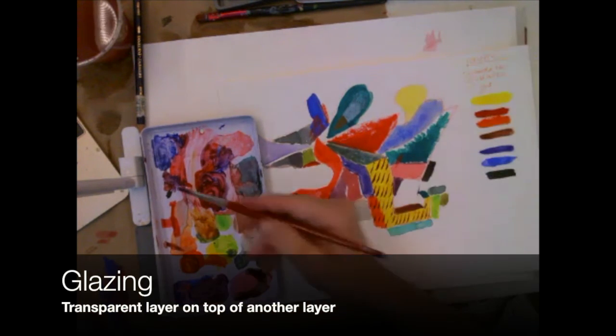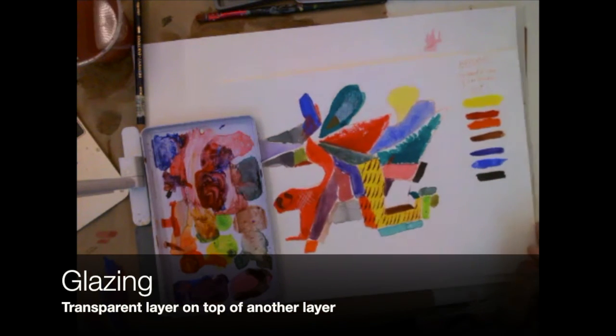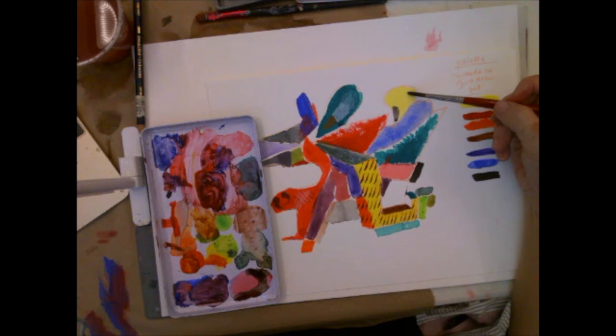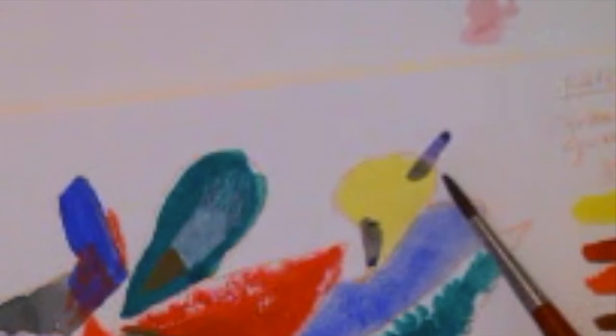So with this yellow, I'm going to put a transparent layer of blue over it. Let's see how this is going to work. And what happens is, let's put it over here. You can see how the under layer is starting to affect the top layer.